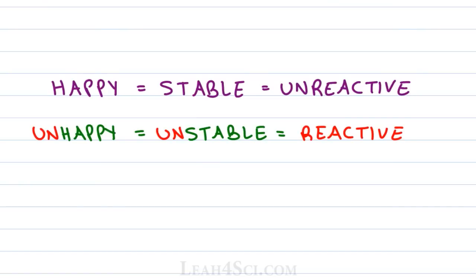But if it's unhappy, it's unstable and it wants to change its situation making it very reactive. So as you're looking at the resonance contributing structures, ask yourself which one is more stable and which one is less stable? And more importantly, why is it more stable and why is it less stable?